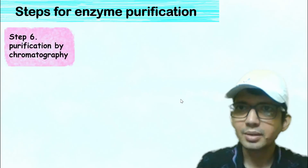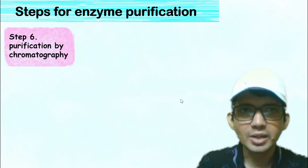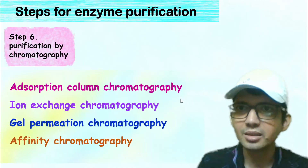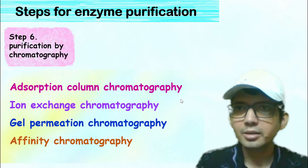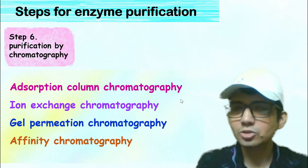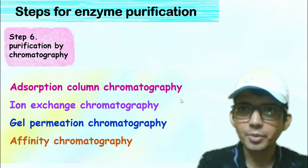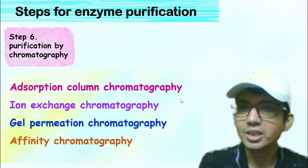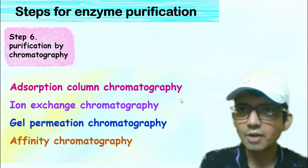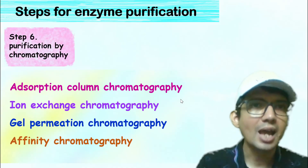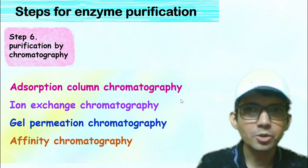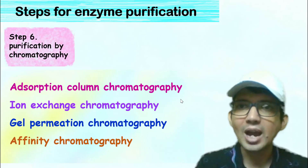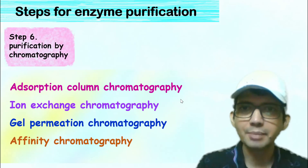The last step is purification of the enzyme by chromatography. Different chromatography techniques such as adsorption column chromatography, ion exchange chromatography, gel permeation chromatography, and affinity chromatography can be used for final purification of the enzyme.